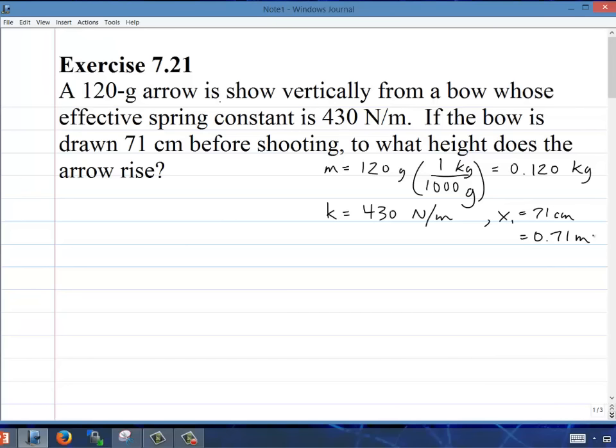To what height does the arrow rise? We're trying to find the height when the final velocity, v2, is equal to zero.